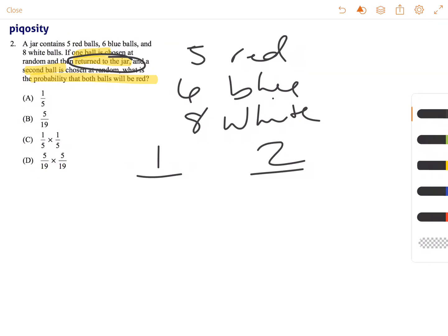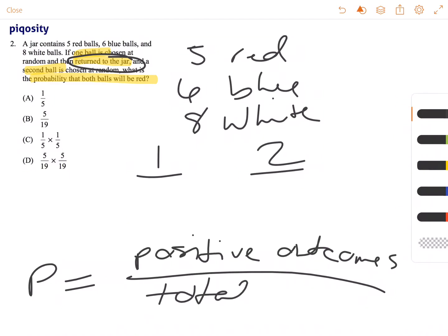So the question is asking what the probability of drawing both red balls will be. The first thing to note with probability is that it's positive outcomes over total outcomes.